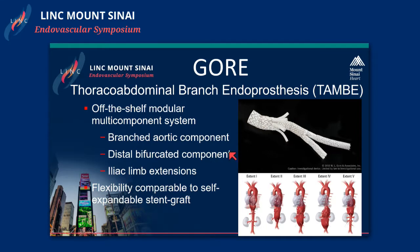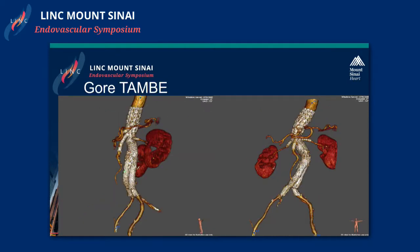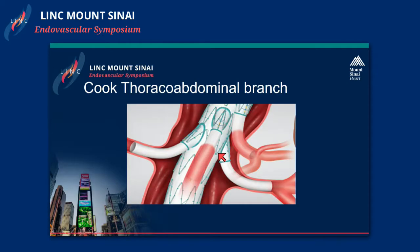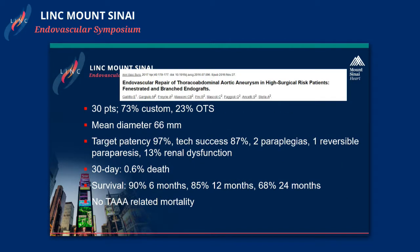Now we're moving into thoracoabdominal devices. This is basically a device used to treat a variety of thoracoabdominal aneurysms — usually you have a branch for the celiac, the SMA, and the renals. This allows treatment of a broader range of anatomy than simply fenestrated. This is a pararenal aneurysm managed here at Mount Sinai. Cook also has a thoracoabdominal branch device. A recently published series on fenestrated and branched endovascular devices appeared in the Journal of Vascular Surgery and the Annals of Vascular Surgery.